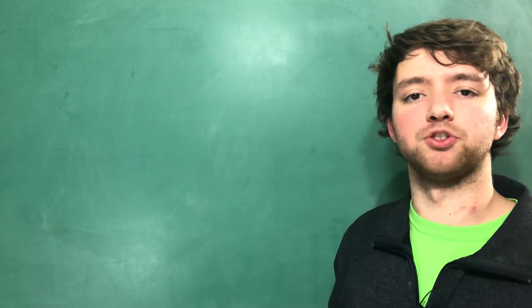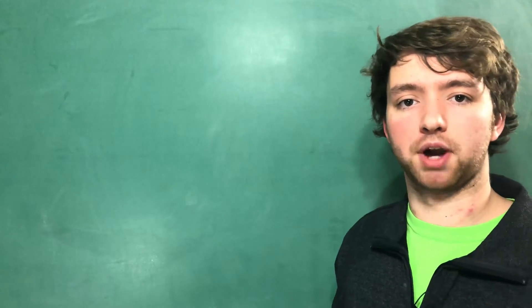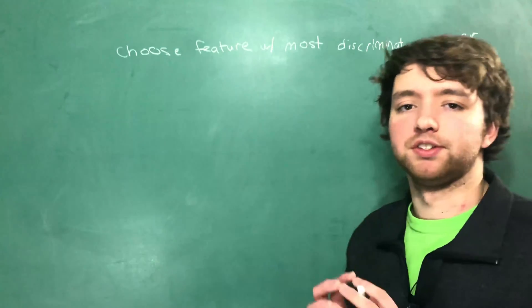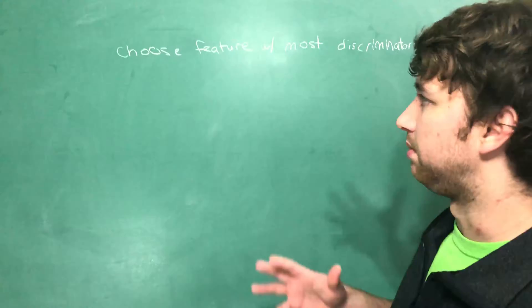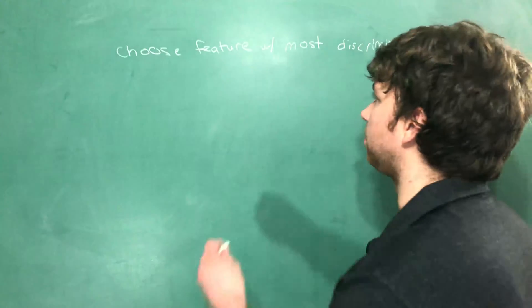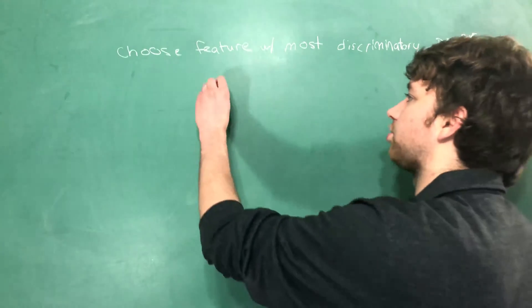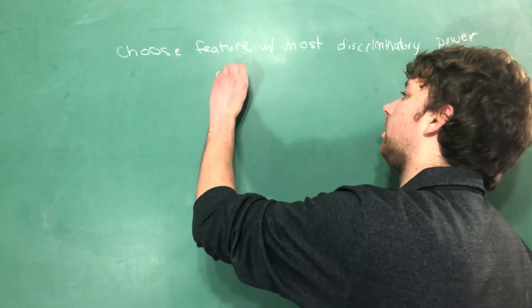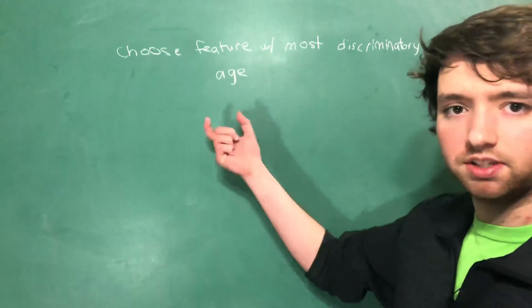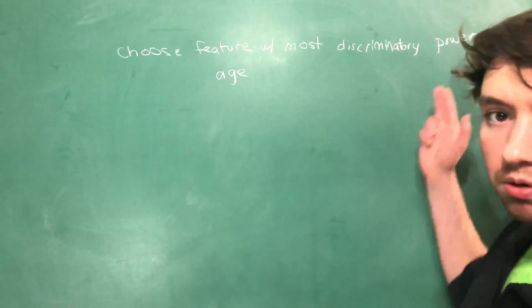The very first thing that the ID3 algorithm is going to do is choose the descriptive feature with the most discriminatory power. If you think back to when we were talking about decision trees, this example might be something like age. So we pick a feature such as age. And the one we pick is specifically the one with the most discriminatory power.